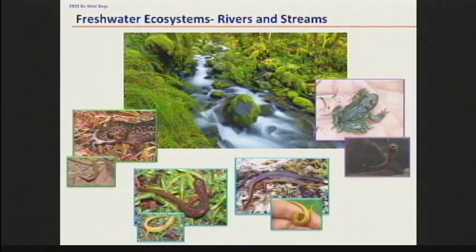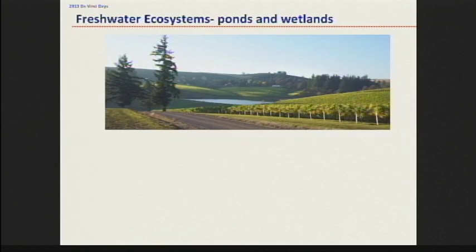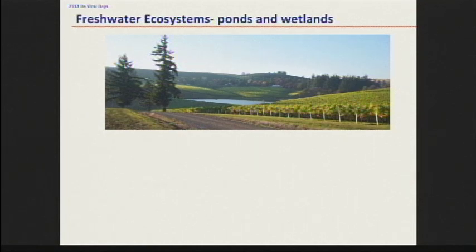There's also the rhyacotritons. We've got some endemic salamander species here that are just gorgeous and beautiful to look at. But we can't forget the still-water species. Still waters — like ponds, wetlands, and small lakes — are also home to a hugely diverse amphibian group.